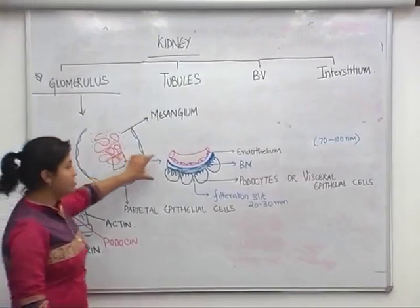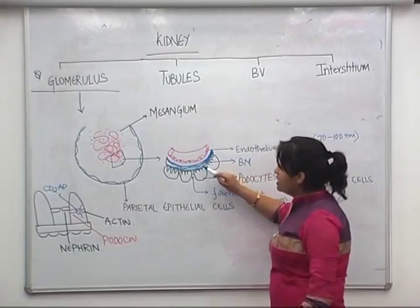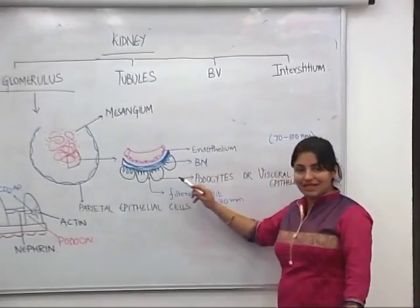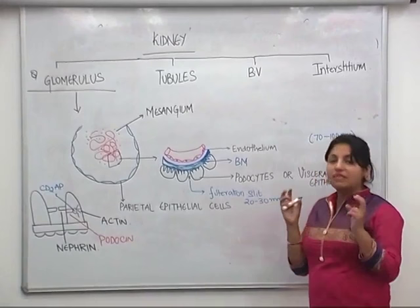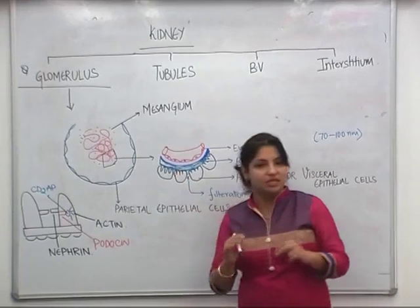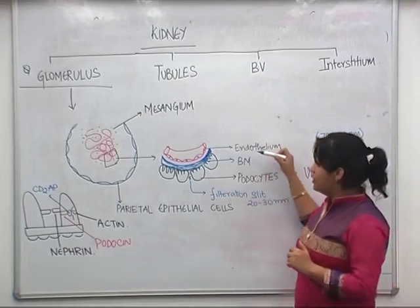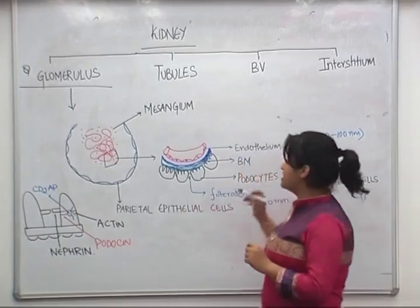This tuft of capillaries is made up of capillaries supported by a basement membrane. The outer side of the basement membrane is lined by special epithelial cells known as podocytes or visceral epithelial cells. The capillary itself is lined by endothelium. So the layer of endothelium, basement membrane, and podocytes together constitute the filtration barrier of the kidney.